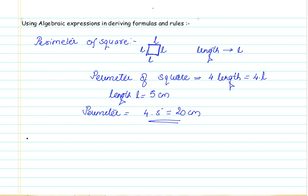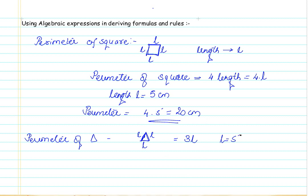Let us take one more example with the perimeter of a triangle. A triangle has 3 sides. If they are 3 equal sides — that is, an equilateral triangle — and we denote each side as L, then the perimeter comes to 3L. For a value of L equal to 5, this gives us 15 cm.